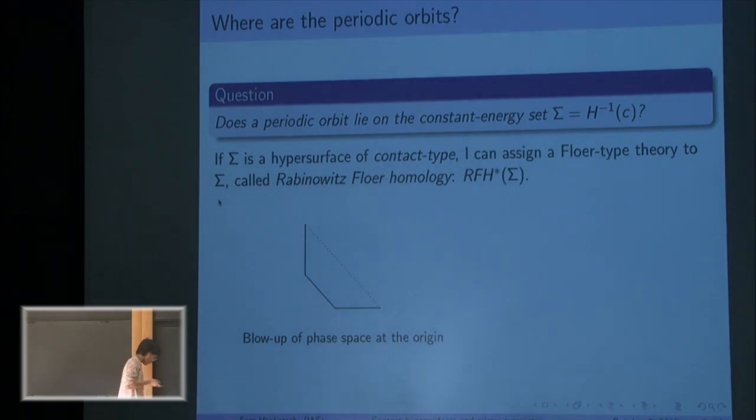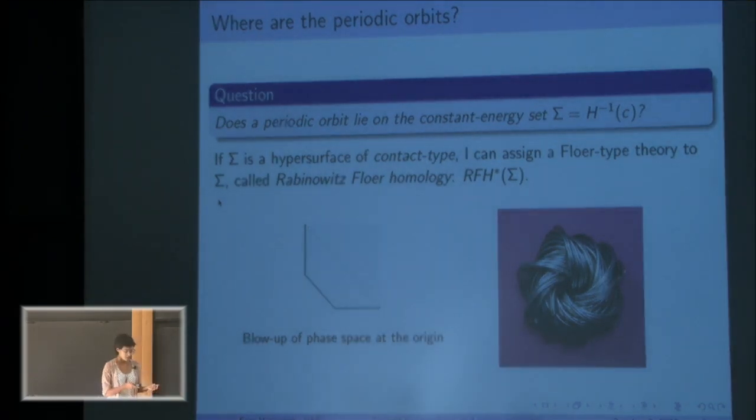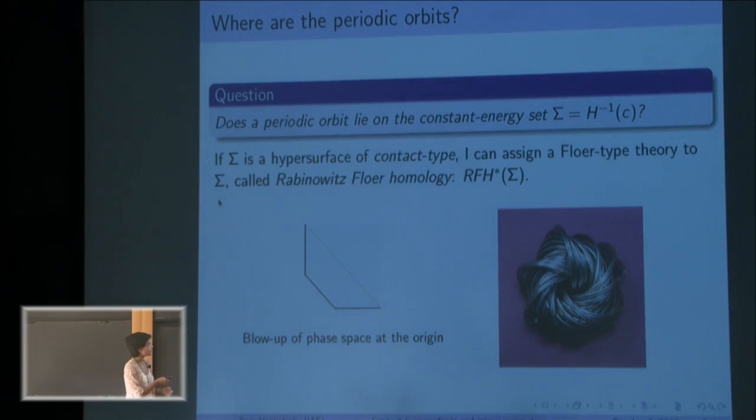And so if I take my energy function to be radially dependent, each of these three spheres is a constant energy hypersurface, and I can ask, what are the dynamics? It turns out this is pretty boring. It's well known these three spheres are just foliated by periodic orbits much the way these key rings fill up three-dimensional space.